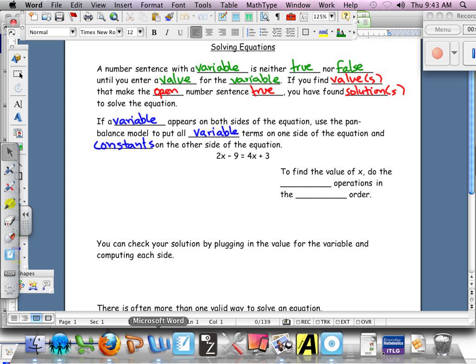So 2x minus 9 equals 4x plus 3. So with this model, visually, it looks like [counting items to place]. Yeah! So I have 2x minus 9 equals 4x plus 3. Same problem that we're going to look at in our notes.